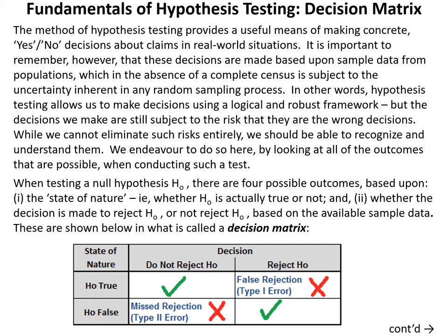Hypothesis testing provides a useful means of making concrete yes-or-no decisions about claims in real-world situations. It's important to remember, however, that these decisions are based upon sample data, which is subject to the uncertainty inherent in any random sampling process. Hypothesis testing allows us to make decisions using a logical and robust framework, but the decisions we make are still subject to the risk that they are wrong. While we cannot eliminate such risks entirely, we should be able to recognize and understand them.